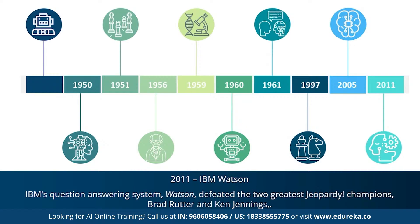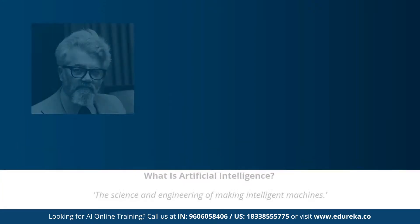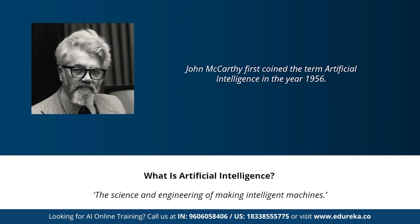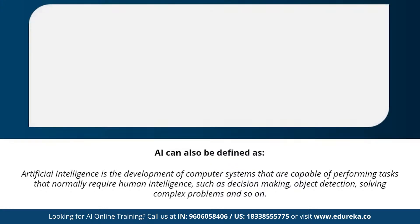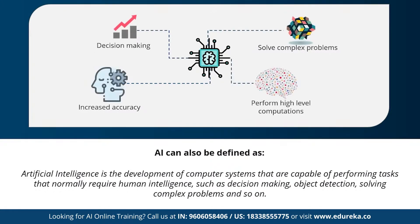Now let's understand what exactly artificial intelligence is. The term was first coined by John McCarthy, who defined AI as the science and engineering of making intelligent machines. AI can also be defined as the development of computer systems capable of performing tasks that require human intelligence — such as decision making, object detection, and solving complex problems. AI helps in decision making, solving complex problems, performing high-level computations, and increasing the accuracy of predictions.